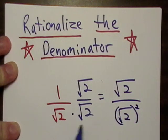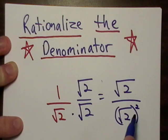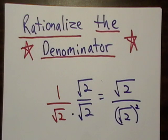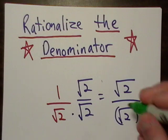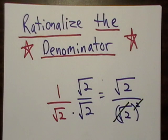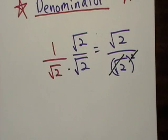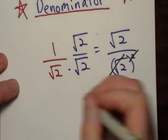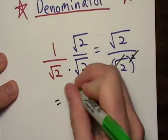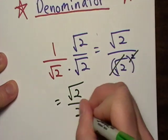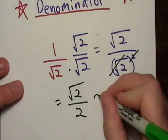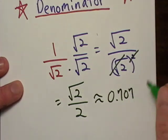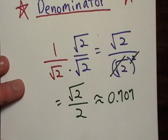Remember, anything times itself is the square of that item. Now that I've squared that item, the radical sign and the exponent cancel each other out. At the end of the day, I'm left with √2 over 2, which is approximately equal to 0.707, and the sine of 45 degrees.